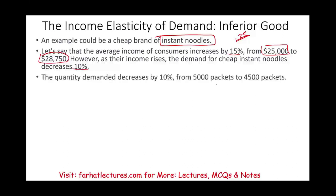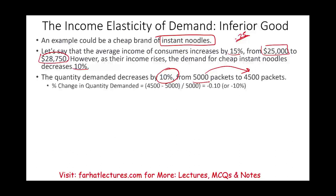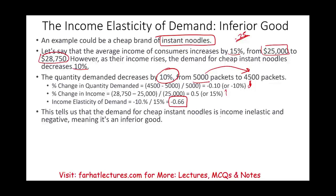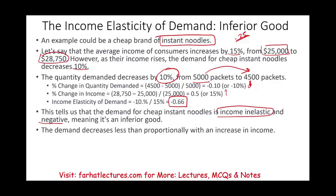The quantity demanded went from 5,000 to 4,500 — it decreased by 10%. Their income increased by 15%, so quantity demanded went down by 10% while income increased by 15%. The income elasticity of demand is negative 0.66. This tells us that the demand for cheap noodles is income inelastic and negative, meaning it's an inferior good. The demand decreases as the income increases, and it's less than zero.